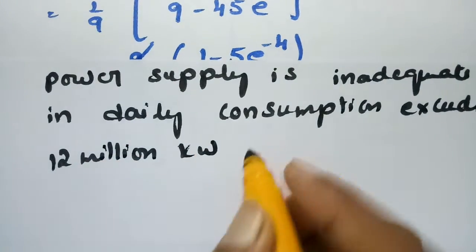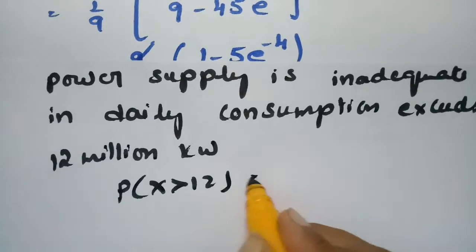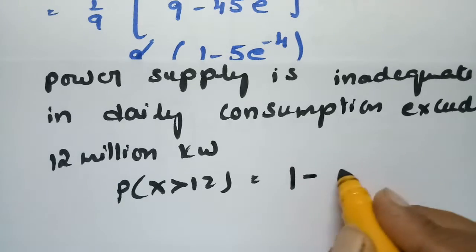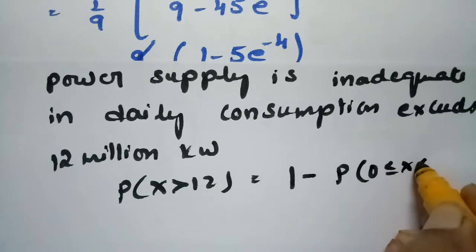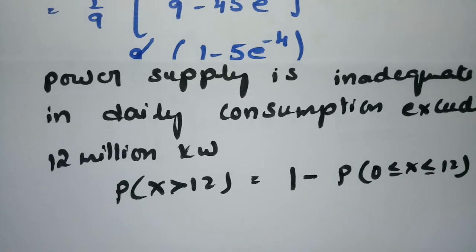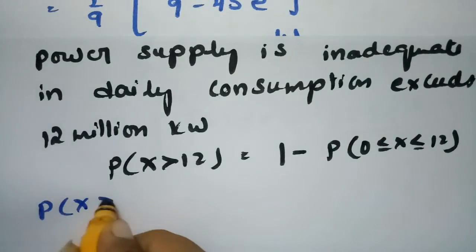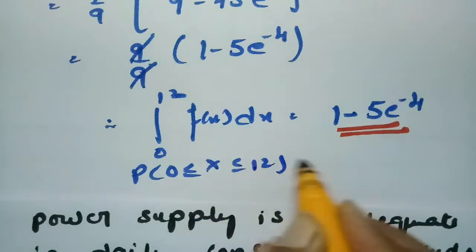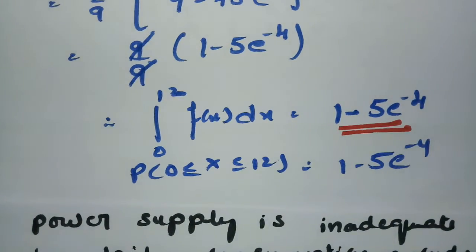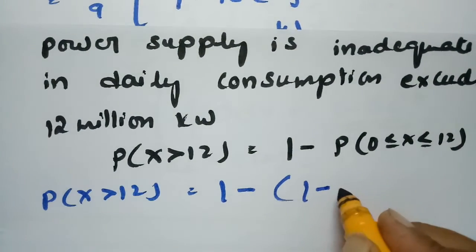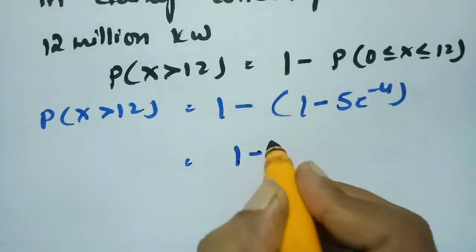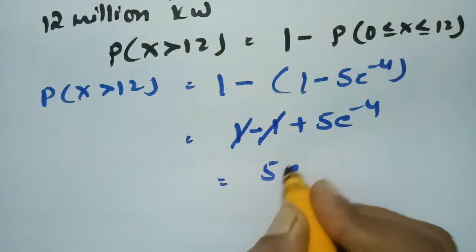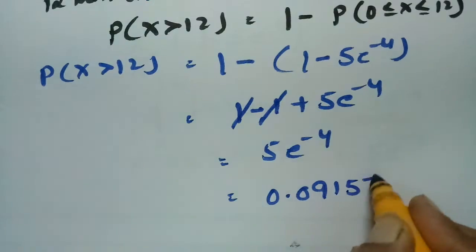The shortage occurs if the daily consumption exceeds 12 million kilowatt hours, that is P(X > 12). This equals 1 − P(0 ≤ X ≤ 12) = 1 − (1 − 5e^(-4)). Simplifying: 1 − 1 + 5e^(-4) = 5e^(-4), which equals 0.0915781.